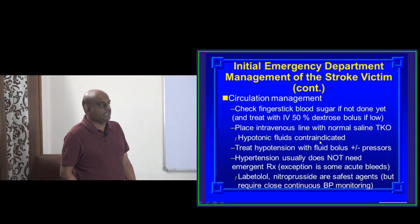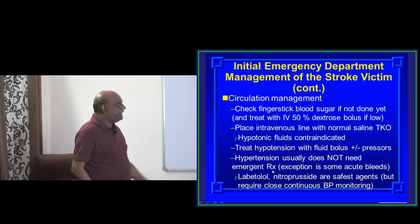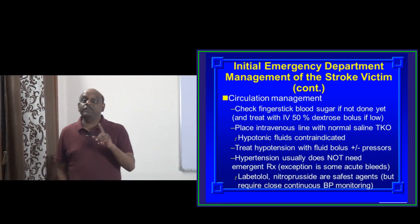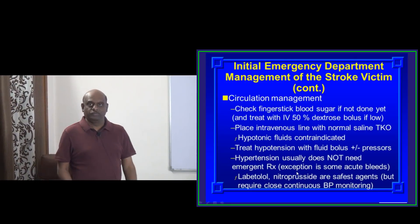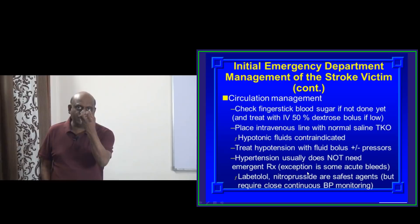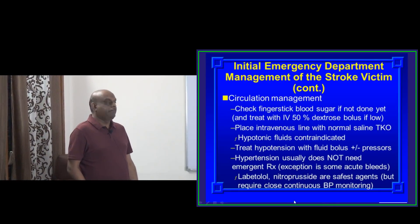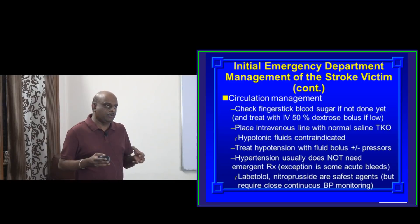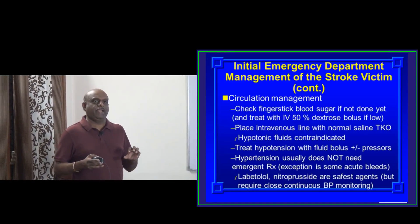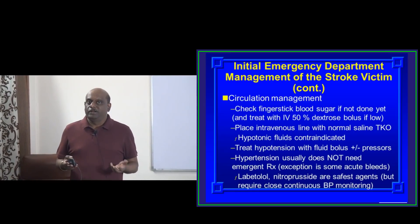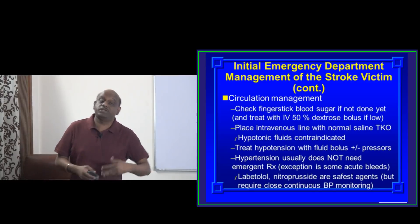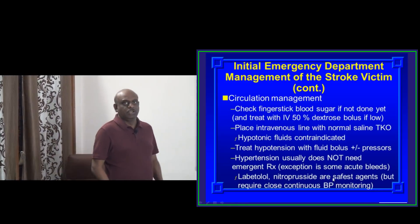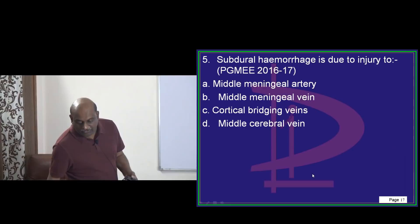Then you treat hypotension with pressors. If there is hypertension with hemorrhagic stroke, you do not need to really do an emergent reduction of hypertension — that is an important point. However, if it is an acute bleed, then it is logical to emergently decrease the blood pressure. Generally, you do not need to emergently decrease the hypertension. Labetalol, nitroprusside, etc. are all considered safe agents to bring down the blood pressure.